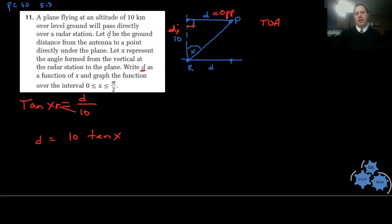Now it also says that we need to graph it over the interval of zero to π/2. Why do we have to graph it over zero to π/2? That's a good question. The reason is if x was zero, that means we would have a